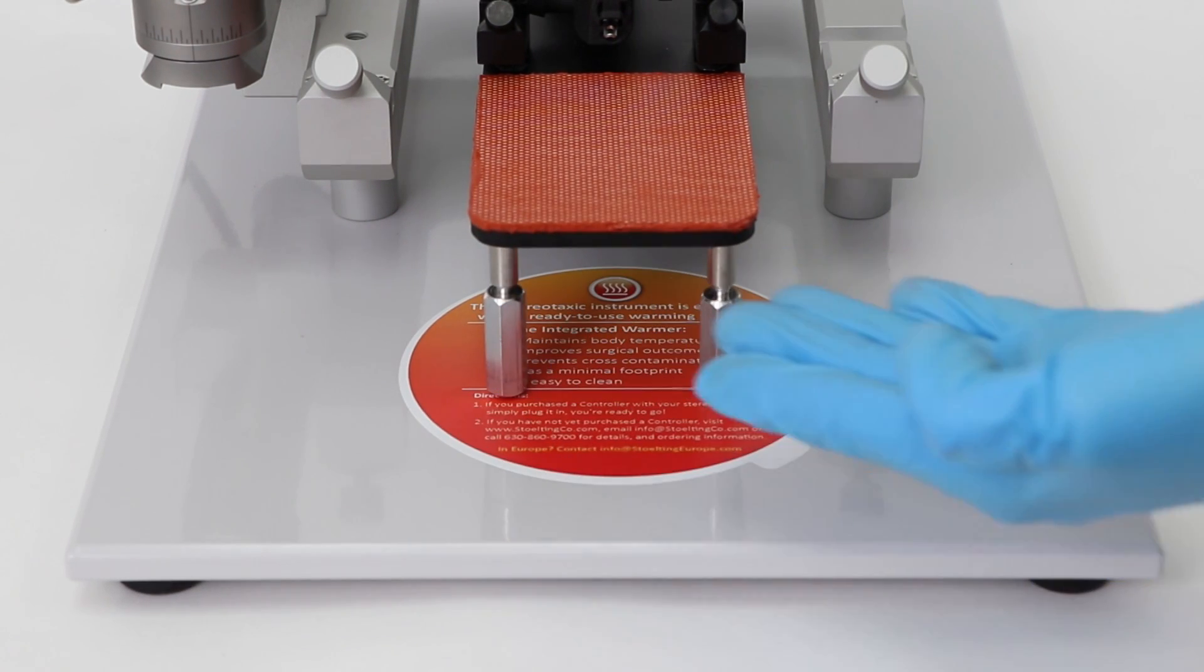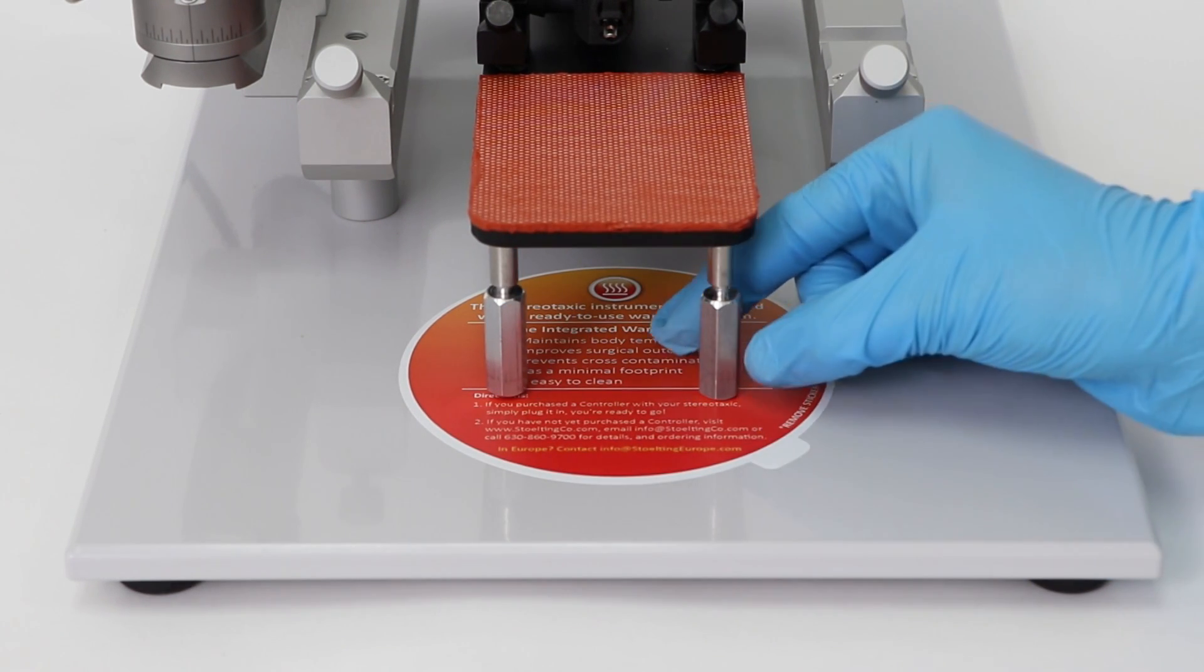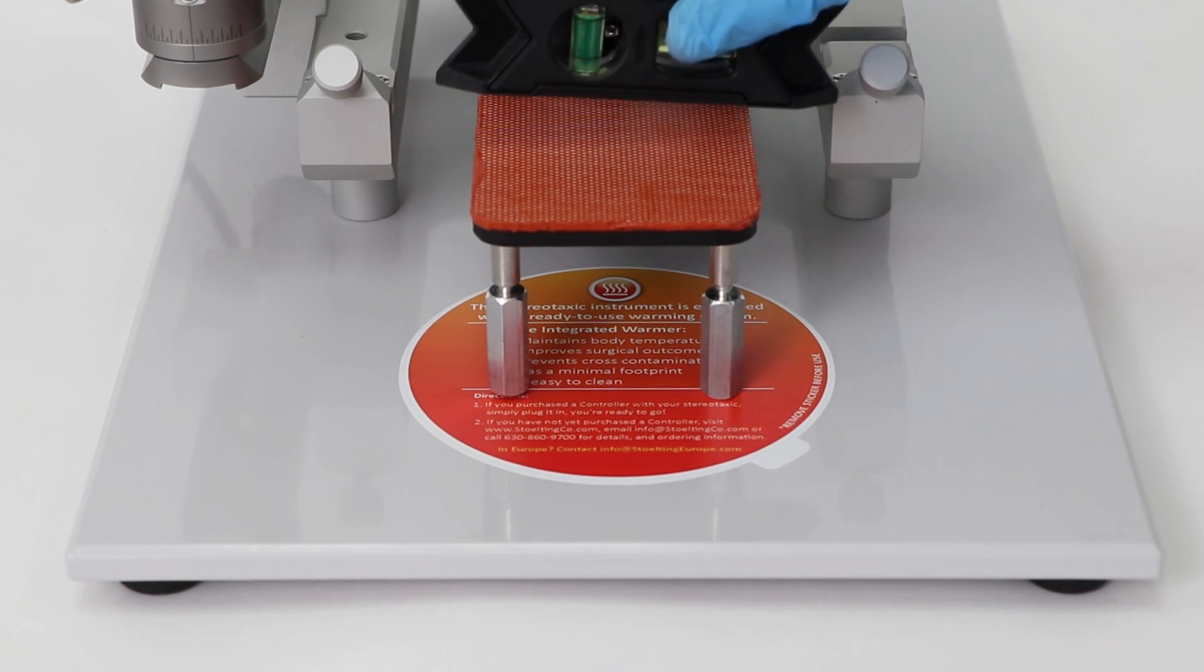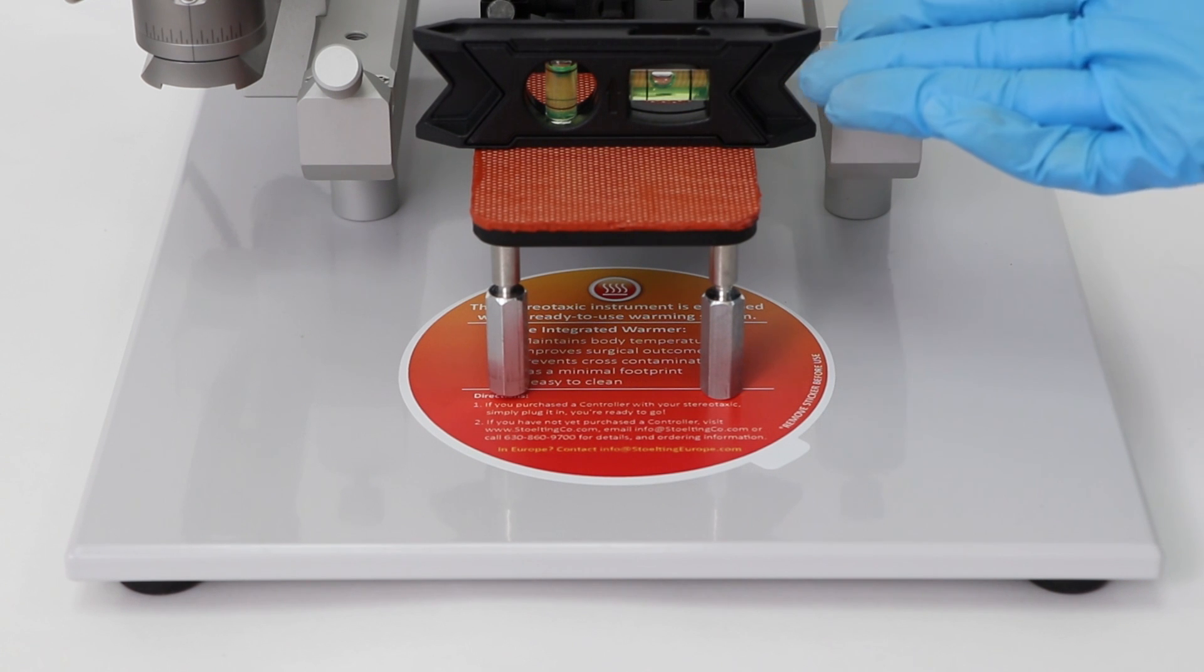Be sure to adjust the warming plate footing to be in contact with the stereotaxic base. To do so, turn the pegs counterclockwise. Make sure the base is level once you complete this step.